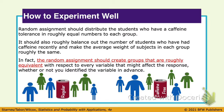Here is your key phrase — you're actually going to write this down at the top of 4.6 where it says key phrase: Random assignment should create groups that are roughly equivalent. That's your key phrase for random assignment.